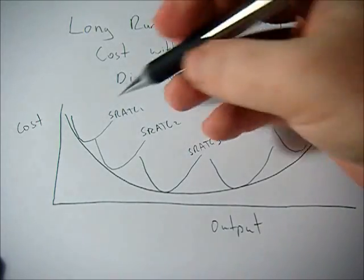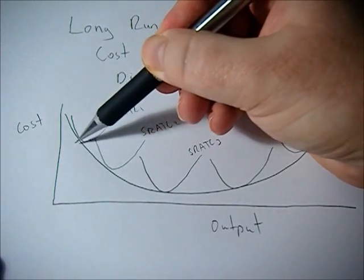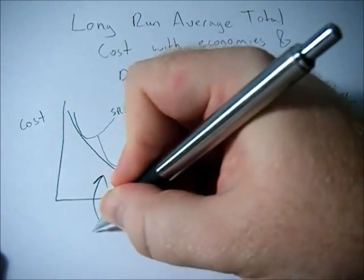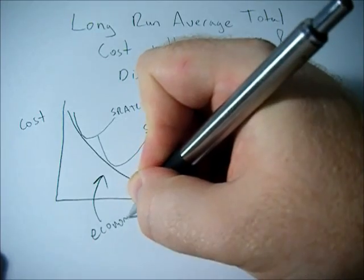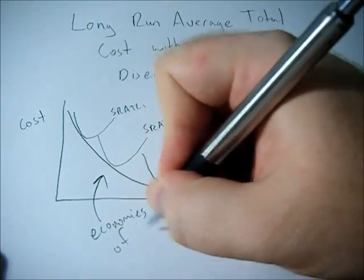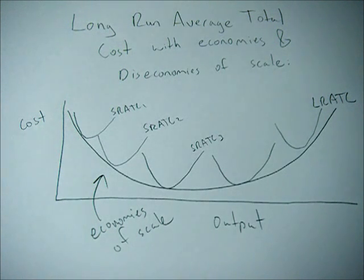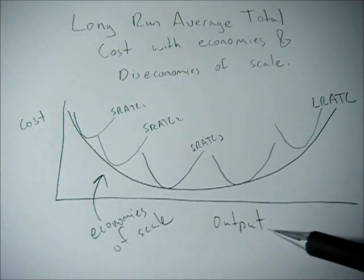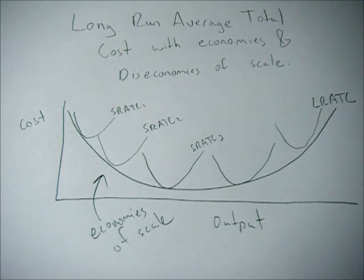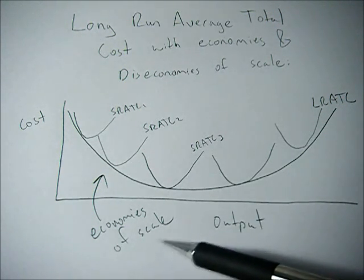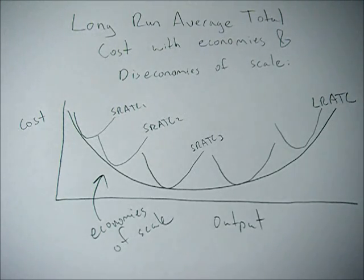In the first part of the curve, where costs are going down as output increases, we're in the economies of scale range. This means that if we double all of our inputs — double the amount of labor, double the amount of capital — we will more than double our output. Economies of scale means it makes sense to grow larger: double all inputs and more than double outputs.